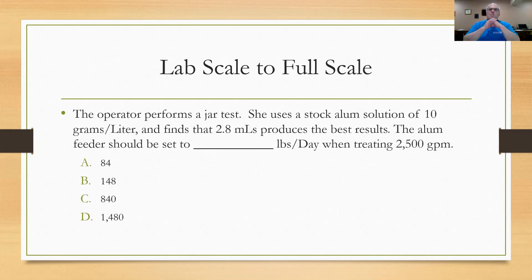Let's try this one: Jar test, full scale. The operator performs a jar test. She uses a stock alum solution of 10 grams per liter and finds that 2.8 milliliters produces the best results for her. So the alum feeder should be set to how many pounds per day when treating 2,500 gallons per minute. They give you the answer choices of 84, 148, 840, and 1,480. Tricky answers. Let's see how they answer. Go to the next slide.